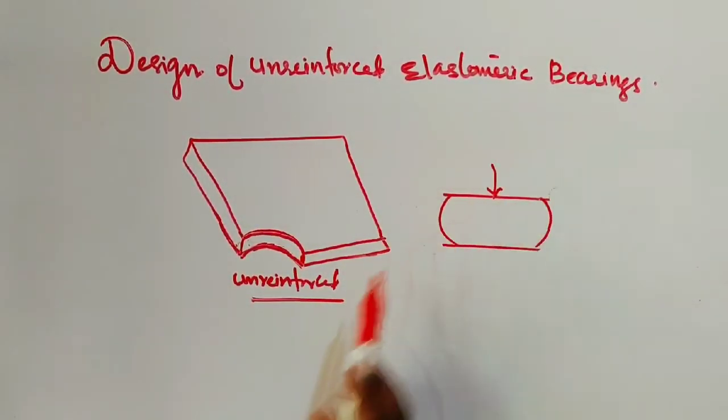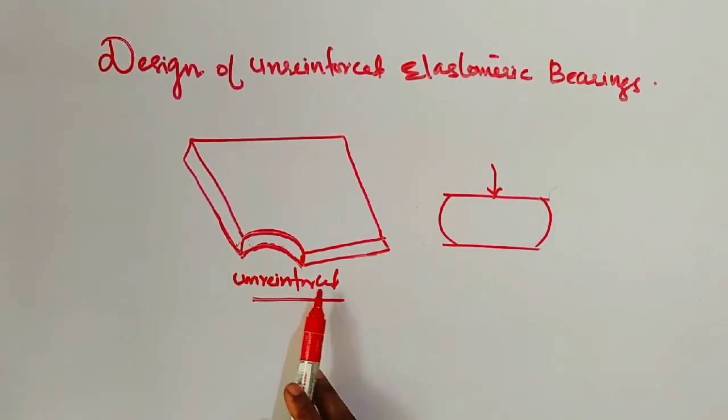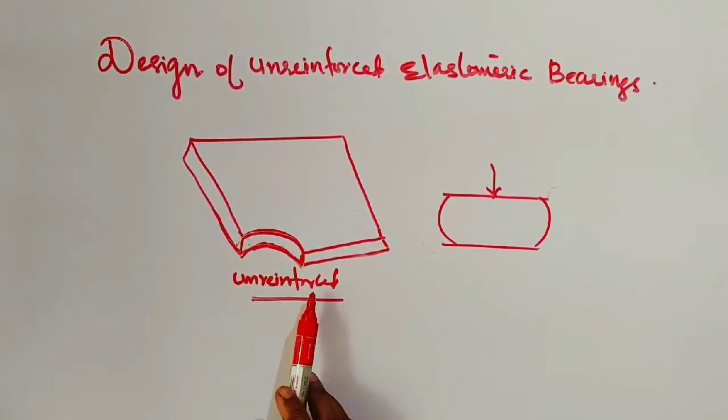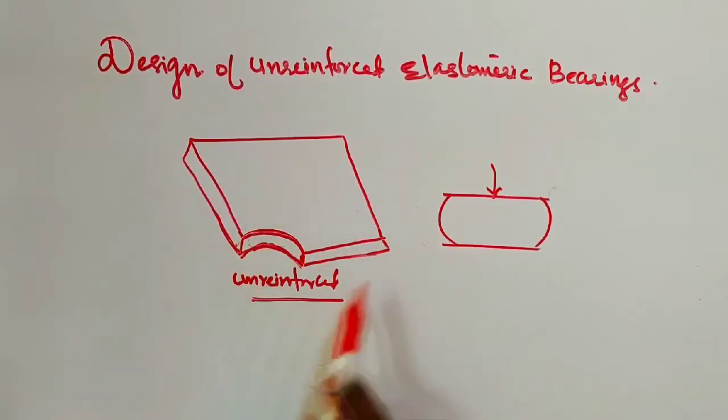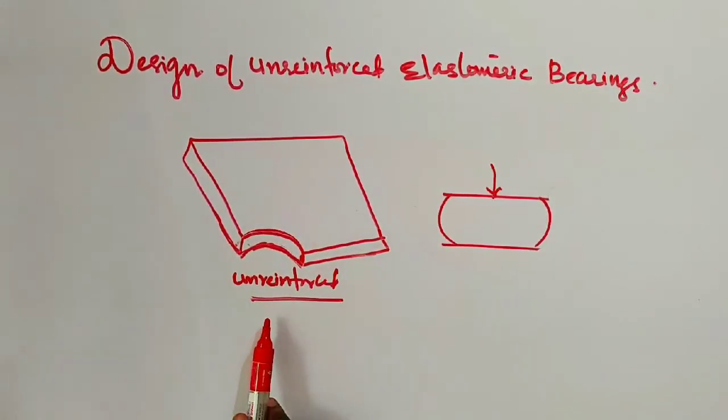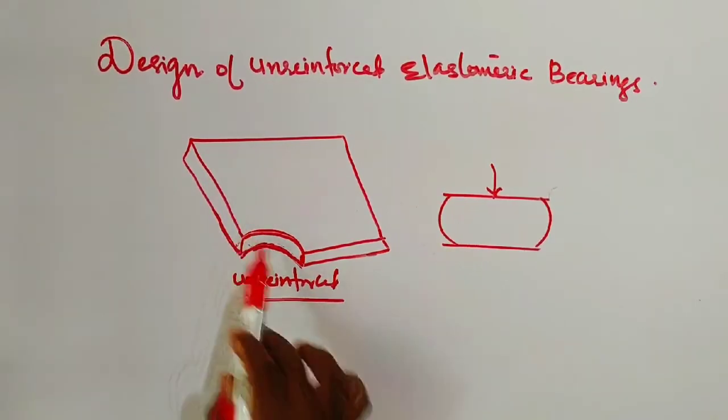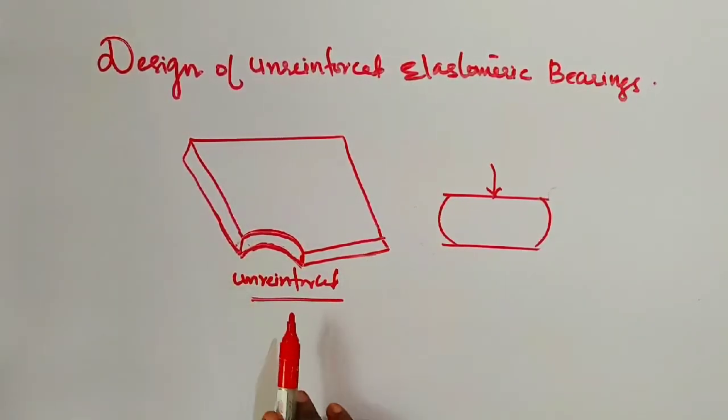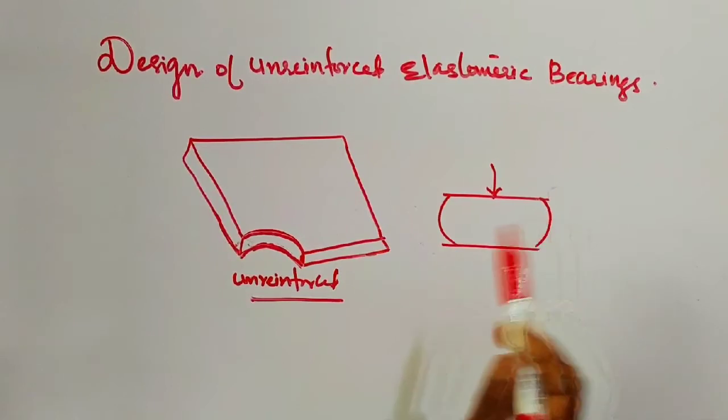Before that, bearings are mechanical arrangements provided in the superstructure to transmit the load to the substructure. That means they transmit the vertical load to the substructure, to the piers or abutment.